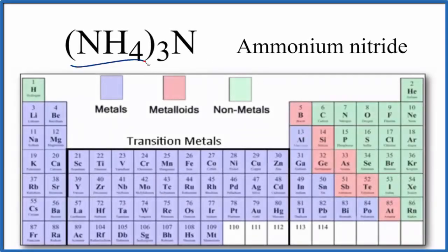Let's take a look at whether NH4 3N, this is ammonium nitride, is ionic or covalent. This is a little bit of a tricky one.